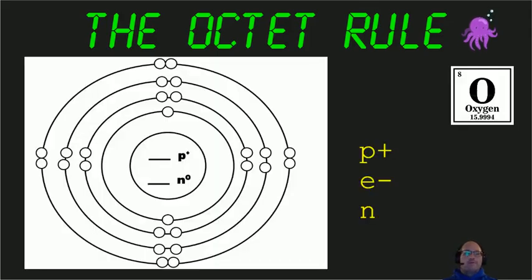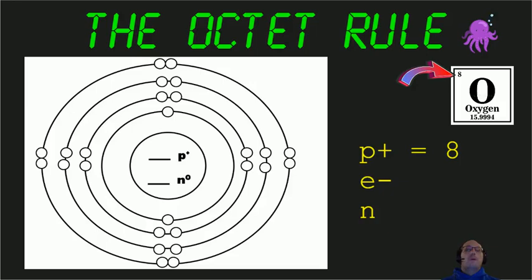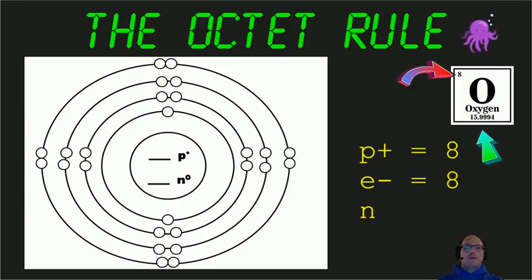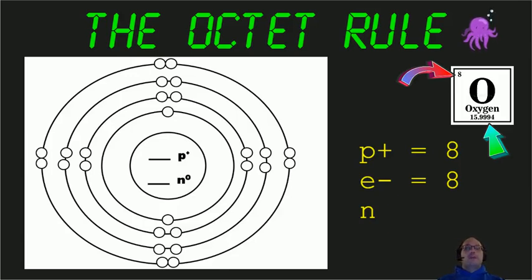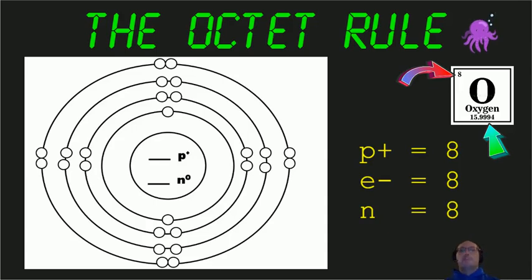If we use oxygen as an example from the periodic table, we want to figure out the number of protons, electrons, and neutrons. Its atomic number is 8, which means it has 8 protons in its nucleus and also 8 electrons in its orbits or energy shells. We figure out the number of neutrons by taking the atomic mass of 15.994 and subtracting the atomic number — so roughly 16 minus 8 — giving us 8 neutrons.